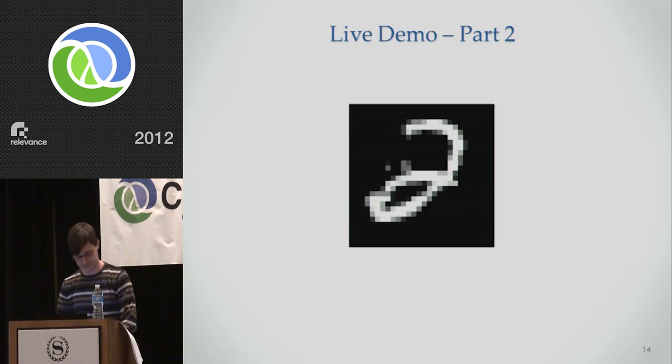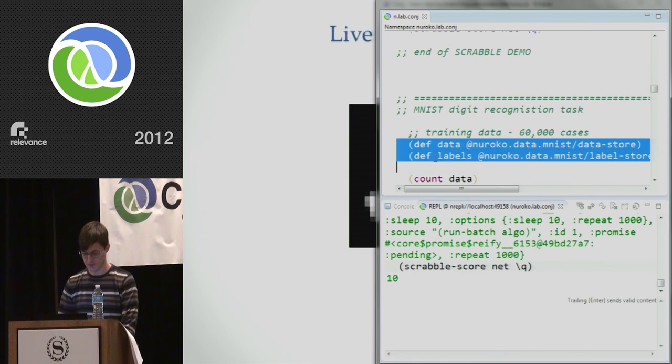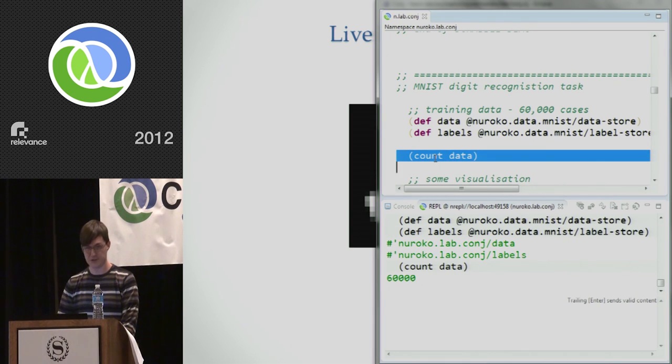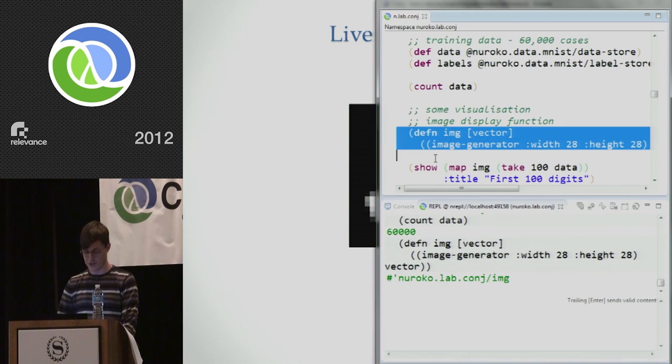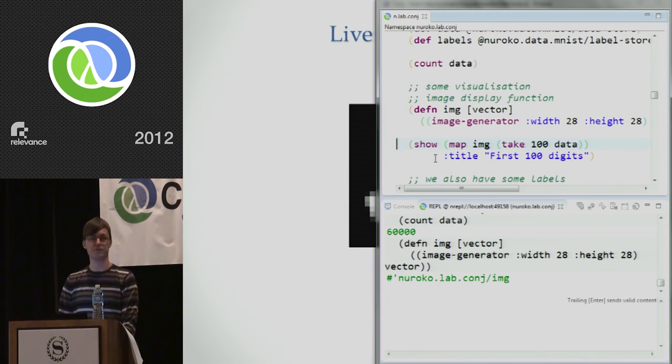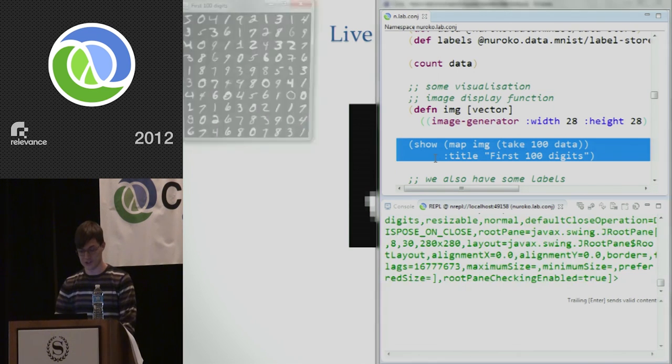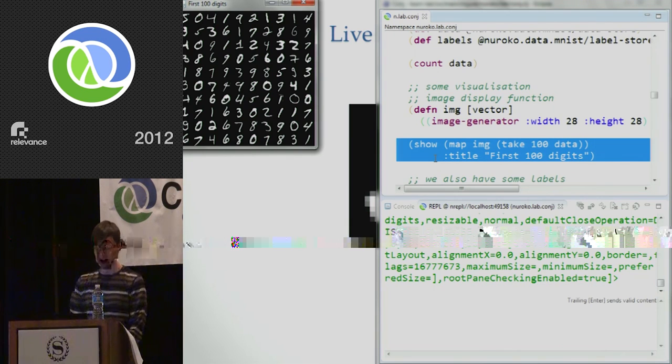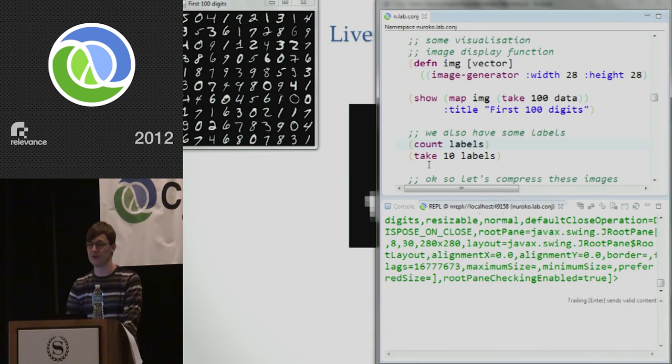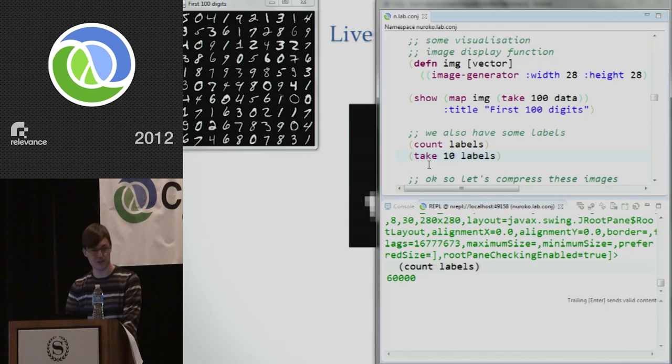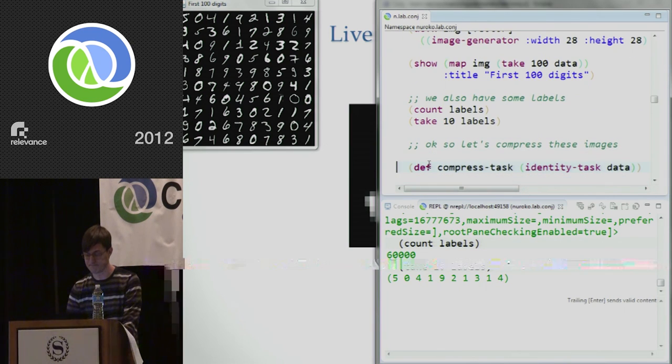So let's give this a quick try. So we'll start off just getting some of our data. We actually have 60,000 training examples here which we're going to use. And, again, it's quite useful to be able to visualize these things. So I'm just going to define an image creation function. And I'm just going to map that over the first 100 data items. And, again, this is the advantage of having a dynamic REPL environment. You can just do these quick visualizations. So that's the first 100 digits. You can see they're all handwritten, quite a bit of noise in them. And that's what we're going to train this thing to recognize. We also have the labels. And the labels are the correct digits that we're expecting to recognize. So we've got 60,000 of them. Take the first 10. That should be the same as the first line of those digits up there.